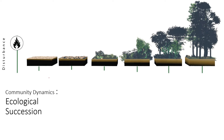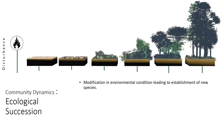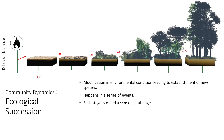Ecological succession works towards complexity, involving modification of environmental conditions leading to establishment of new species. For example, in a region where fire happened or a disturbance dried out everything, a few straws enabled the growth of fungi and small plants, which led to growth of grasses, then shrubs, then small trees, and finally large dense trees. This happens in a series of events, and each stage is called a sere or seral stage.